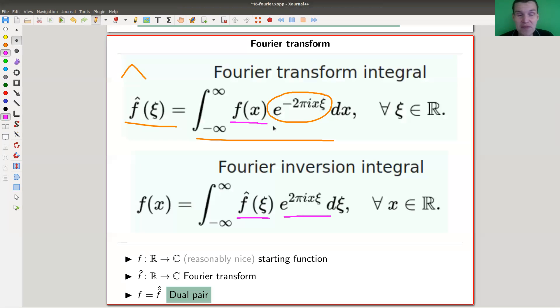And it has this nice property that basically it's a dual pair. If you do it twice you come back to where you started. So you start with some nice function, you can take the Fourier transform, you get another function which encodes the coefficients of the Fourier series if you want.